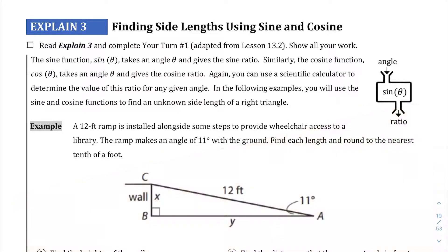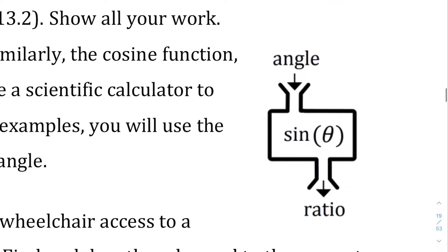Okay, we're on this Explain 3 section, and we're going to be using those sine and cosine ratios to find missing pieces. And again, it's very similar to the tangent ratios that we were using before. And here's a little diagram of what we're going to be doing.